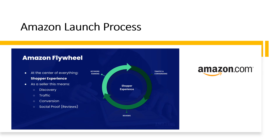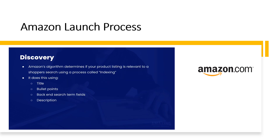This is the Amazon flywheel. At the center of everything is the shopper experience. As a seller, this means we have to focus on discovery, traffic, conversion, and social proof or reviews. When it comes to discovery, Amazon's algorithm determines if your product listing is relevant to a shopper's search using a process called indexing, using your title, bullet points, back-end search terms, and description. The algorithm then prioritizes results on the likelihood that the shopper will buy, based on the historical sales performance of that product, delivering a good shopping experience and making Amazon money at the same time.